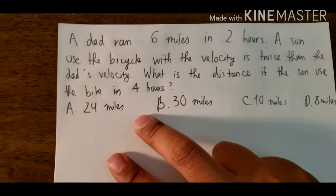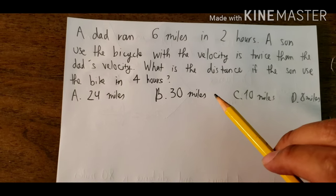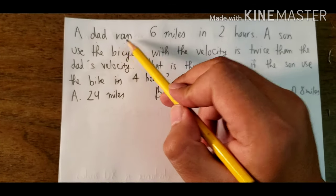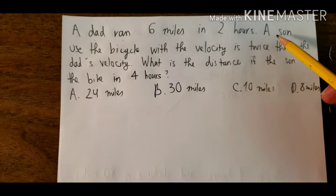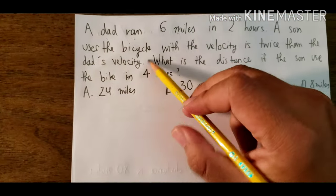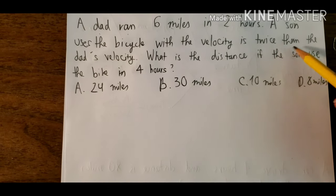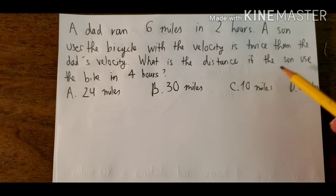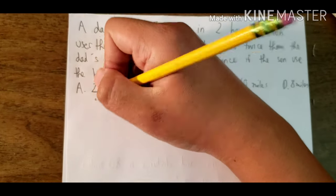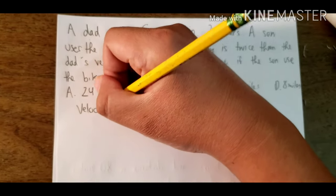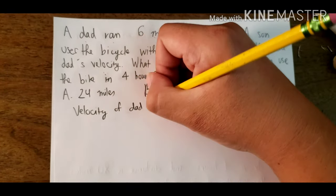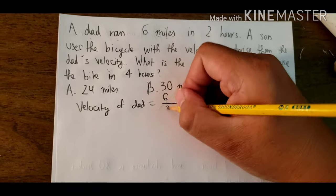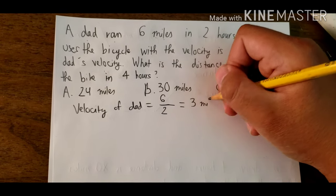The next question is about more advanced reasoning, the kind you find on real tests. A dad ran 6 miles in 2 hours. A son used a bicycle with a velocity twice the dad's velocity. We first need to calculate the velocity of the dad. We have 6 miles and 2 hours, so the dad's velocity is 3 miles per hour.